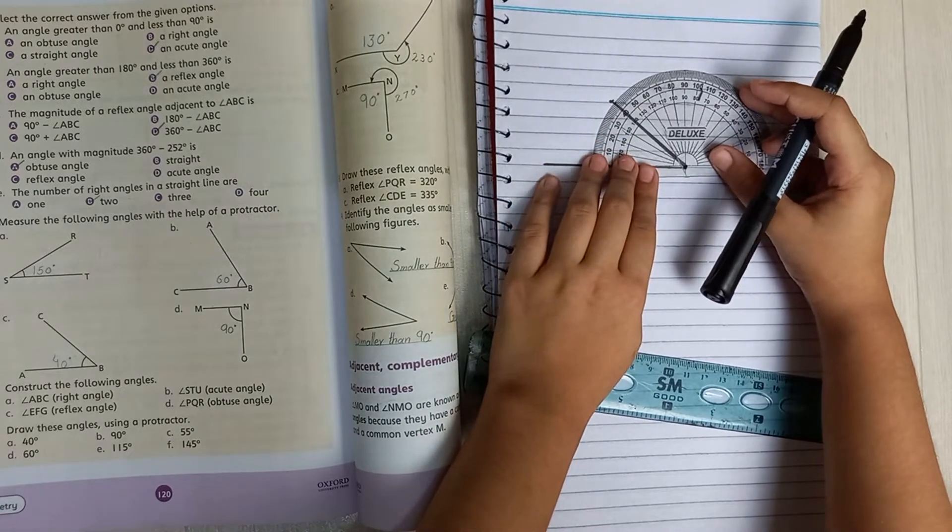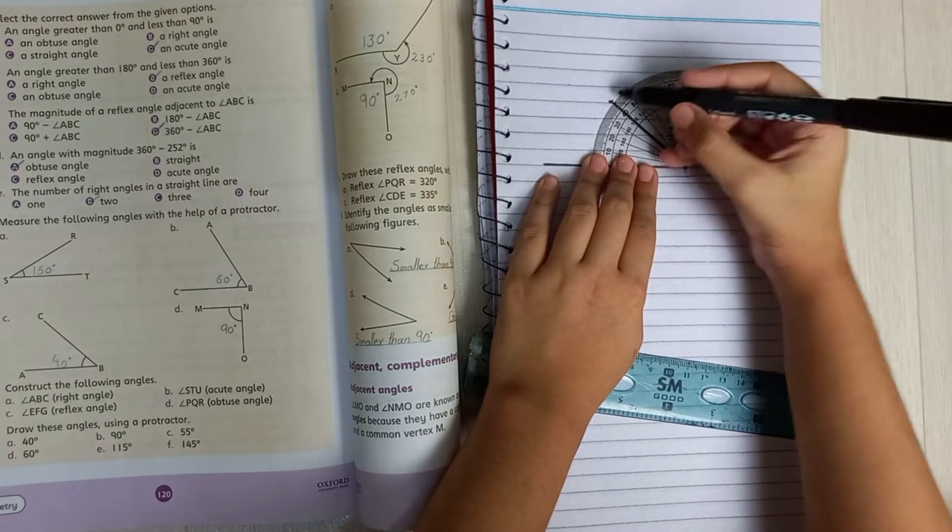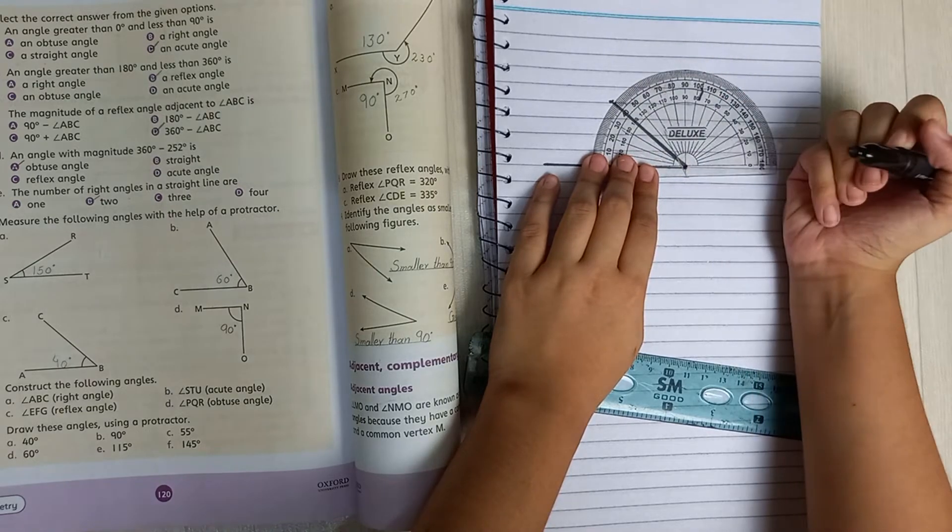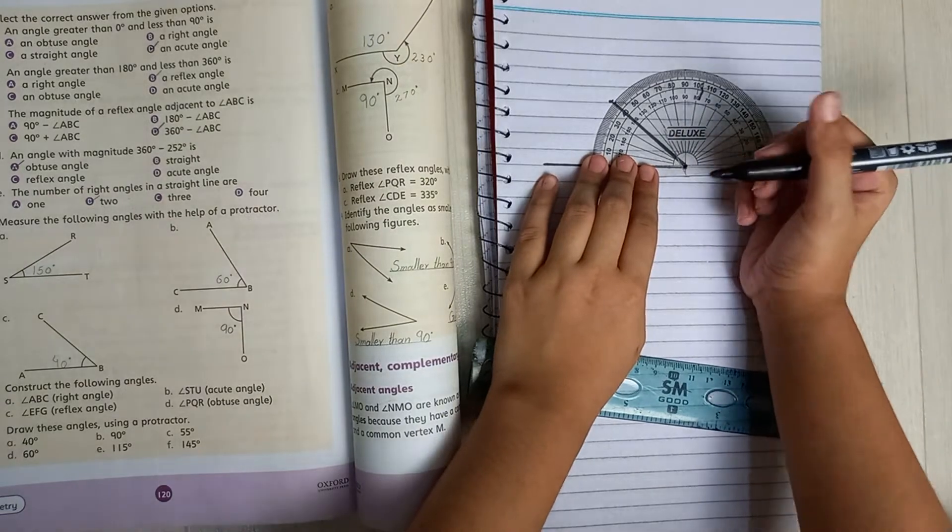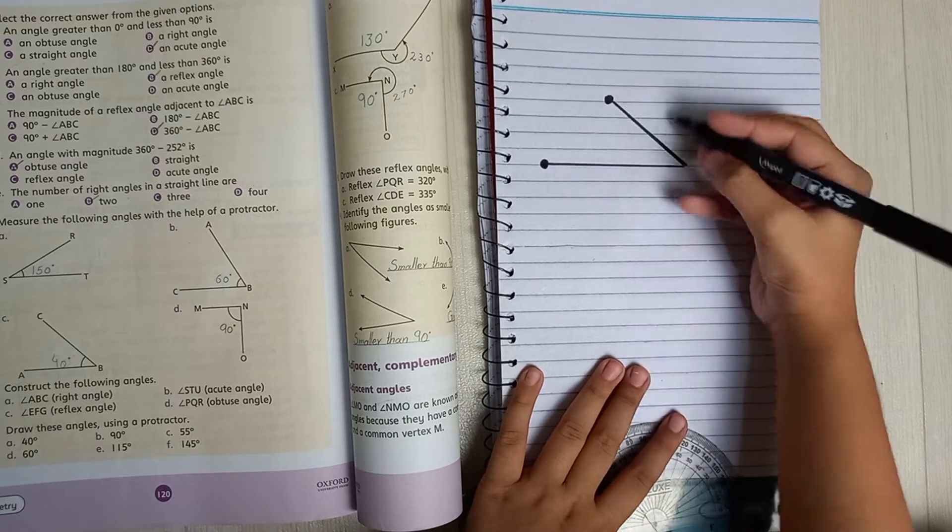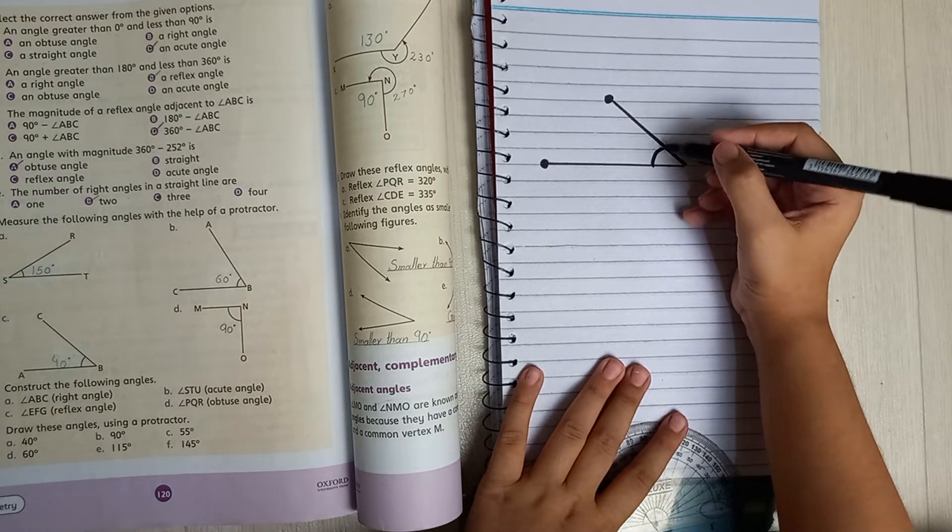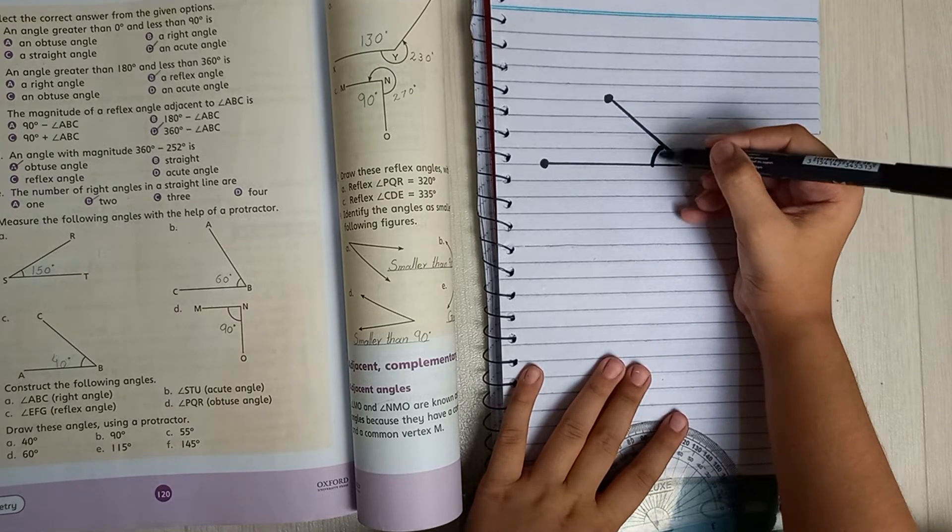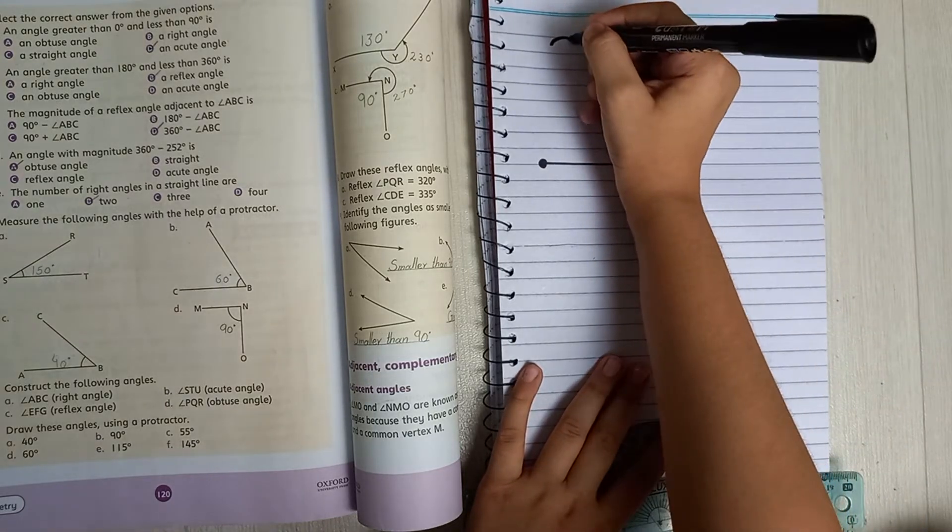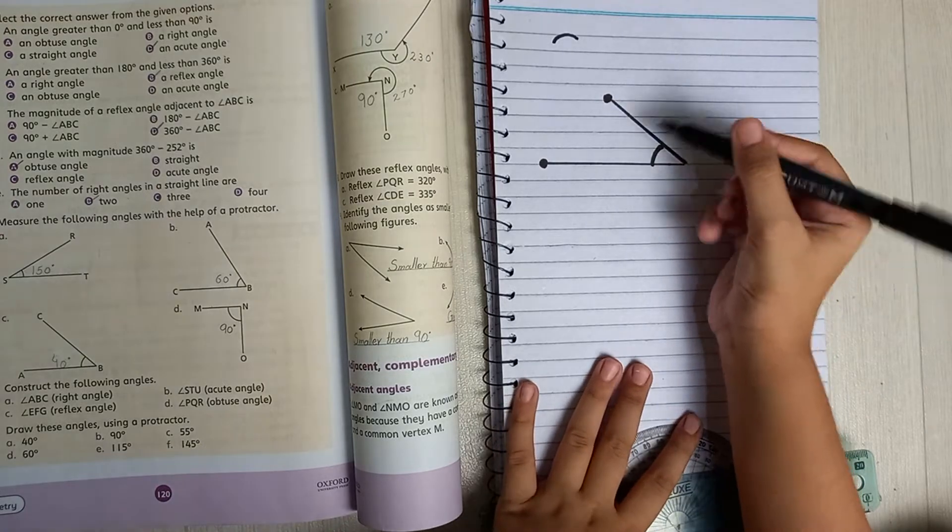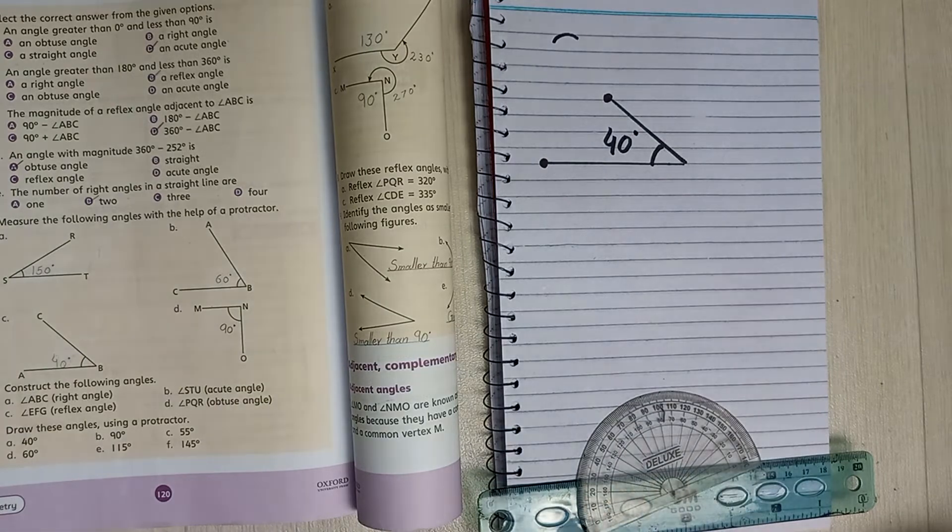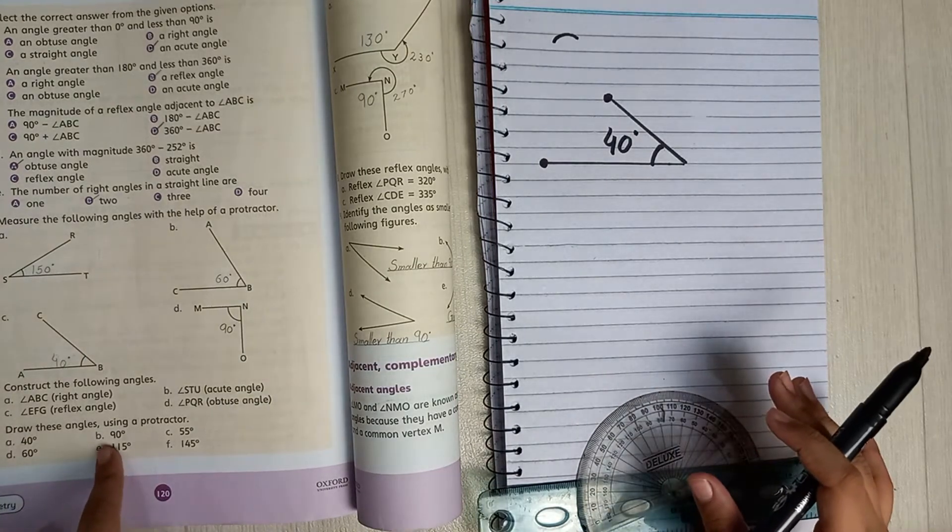Then measure it perfectly. If it doesn't come on 40, you can remove it or draw another one. But mine is perfectly done. Put a dot right here. If you like, you can also put arrows and put this little circle line. Now write 40 degrees. Done. Our first angle is done.